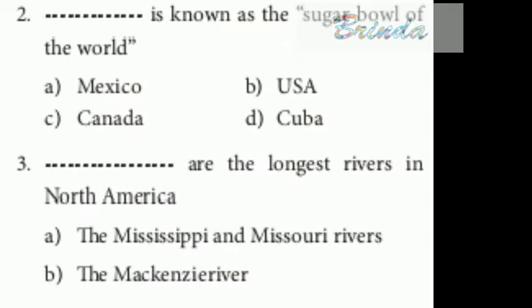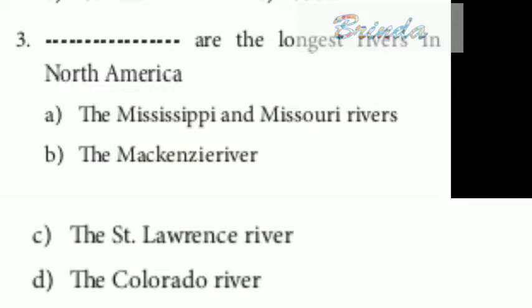Cuba is known as the sugar bowl of the world. Third question: dash are the longest rivers in North America. Options are: the Mississippi and Missouri rivers, the Mackenzie river, the St. Lawrence river, the Colorado river. The answer is the Mississippi and Missouri rivers.